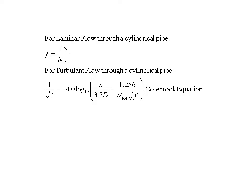If we have laminar flow through a cylindrical pipe, the fanning friction factor is equal to 16 divided by the Reynolds number. For turbulent flow through a cylindrical pipe, the Colebrook equation is appropriate, where the relationship is 1 over the square root of the fanning friction factor is equal to negative 4 times the base 10 logarithm of the surface roughness divided by 3.7 times D, the diameter of the pipe, plus 1.256 divided by the Reynolds number times the square root of the fanning friction factor.